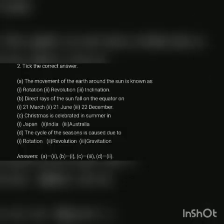Tick the correct answer. The movement of the Earth around the sun is known as: rotation, revolution, or inclination. Direct rays of the sun fall on the equator on 21st March. Christmas is celebrated in summer in Japan, India, or Australia. The answer is Australia.